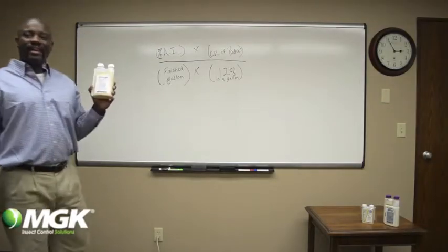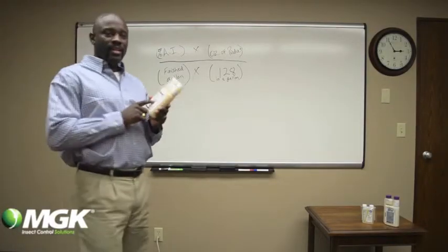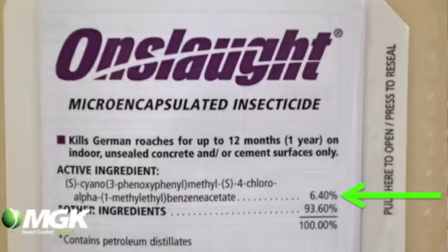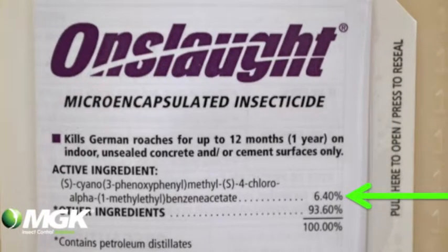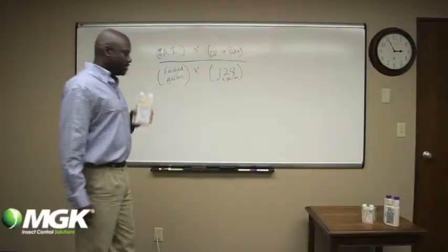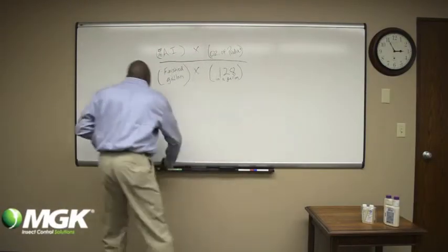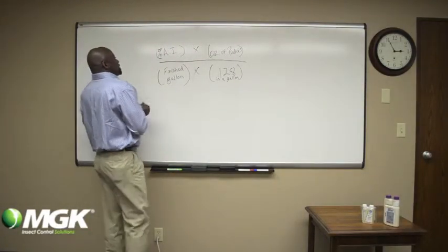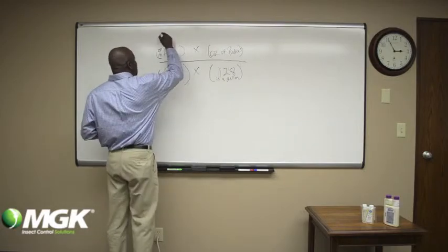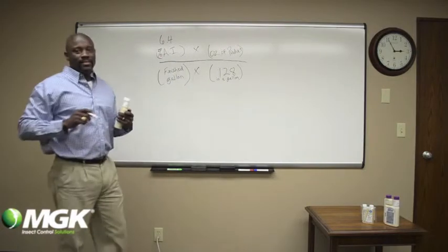First, find out what's the percent active in your concentrate. If you look at Onslaught, you can see it's 6.4% ESFIN. So you take that number 6.4 and plug it in here because that's your percent active.